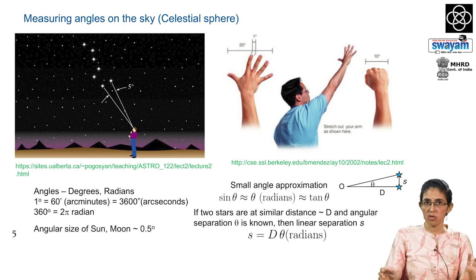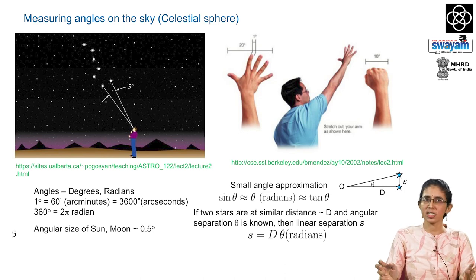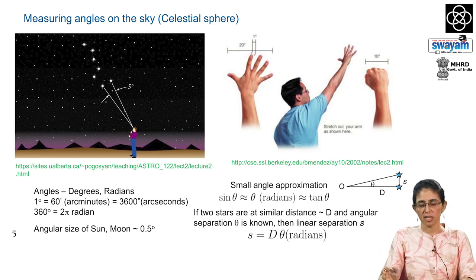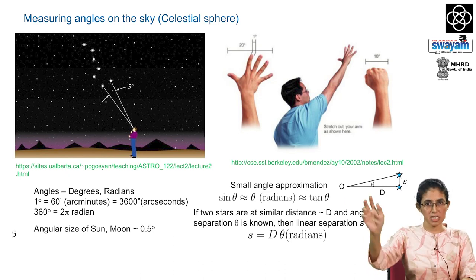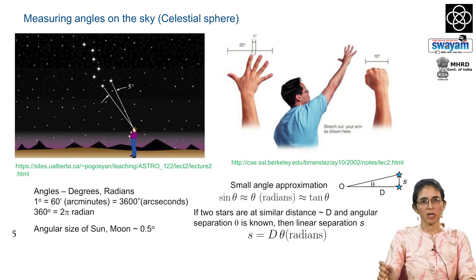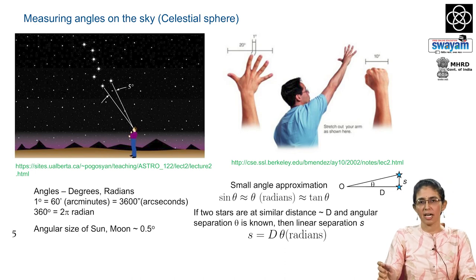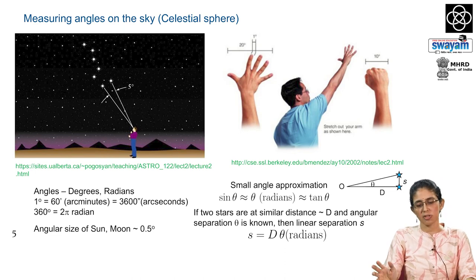For reference, the size of the sun and the moon is approximately half a degree. To get an idea of what 10 degrees looks like, one can stretch out one's hand — the width of one finger roughly corresponds to 1 degree, a fist is of the order of 10 degrees, and the full palm is around 20 degrees. This is just to give a feel of angular sizes and angular separation between stars.